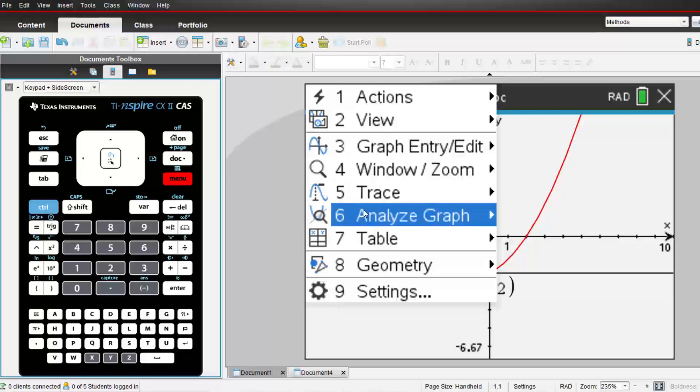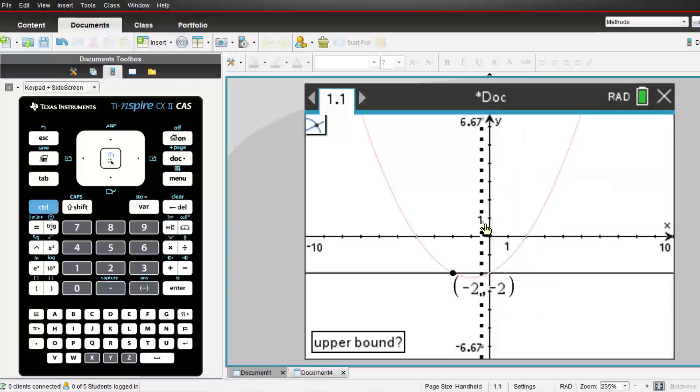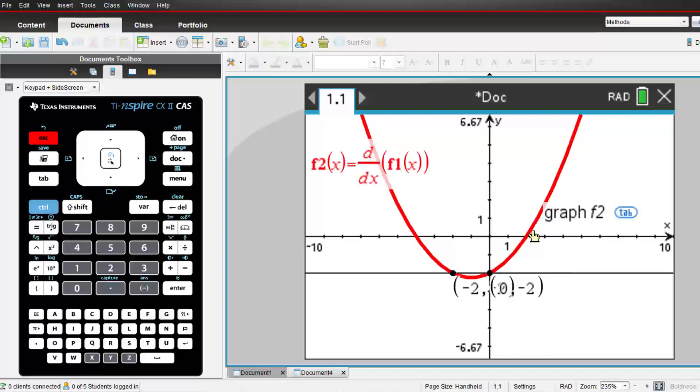So the range of values of x for which the derivative is less than negative 2 occurs between negative 2 and 0.